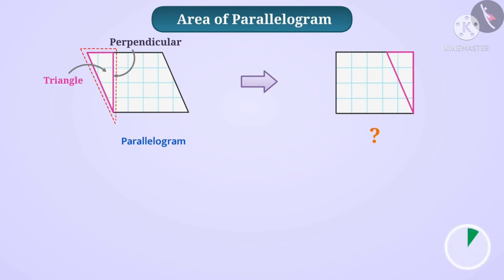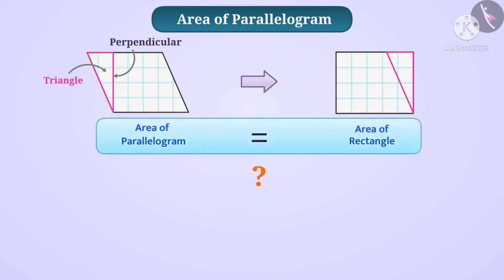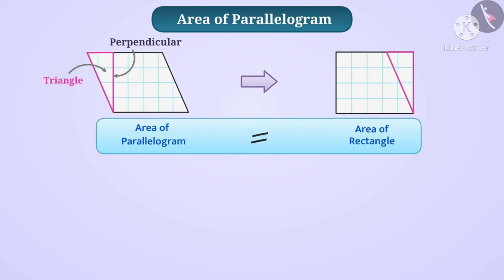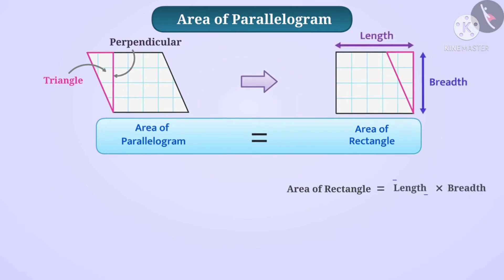It is a rectangle. So, the area of the parallelogram is equal to the area of the rectangle. You think and say? Yes. The occupied space is the same. So, area of the parallelogram is equal to area of the rectangle. Area means it is the occupied space, and both shapes cover the same space.